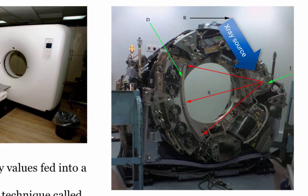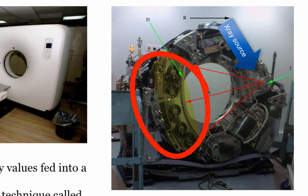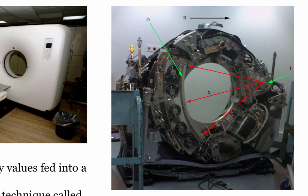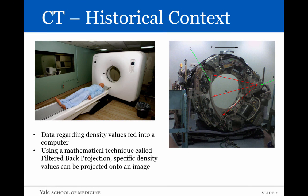The idea is that you have an x-ray source, similar to conventional radiography, placed at one end of a large circle. On the other end, there are a row of detectors. When the x-ray source is switched on, it releases x-rays that are detected by these detectors. For every slice it goes through, data regarding density values are fed into a computer. Utilizing a mathematical technique called filtered back projection, you can post-process this data and assign specific density values with different shades of gray going from black to white, which are then projected onto a computer screen to make up the image of that particular slice.